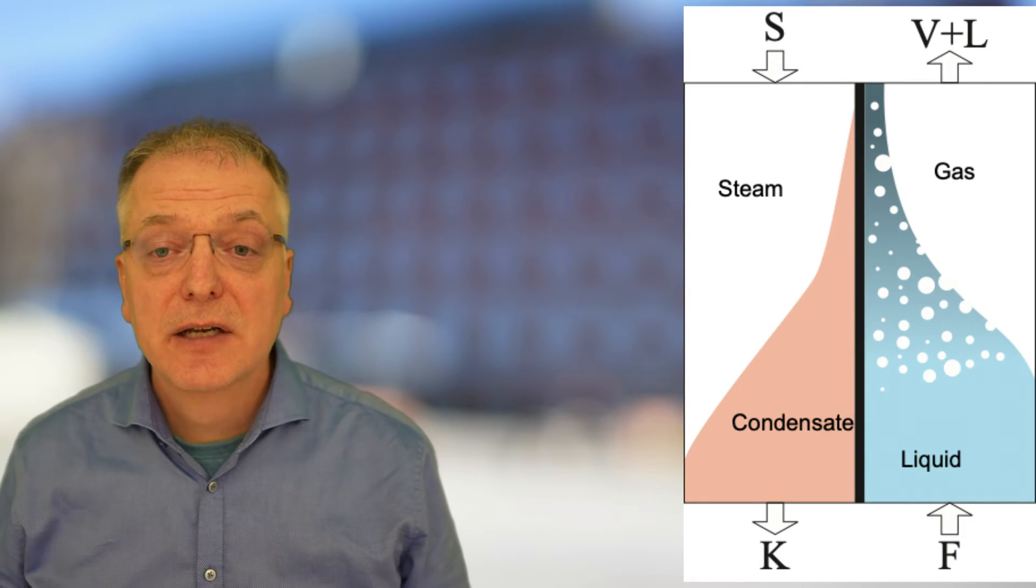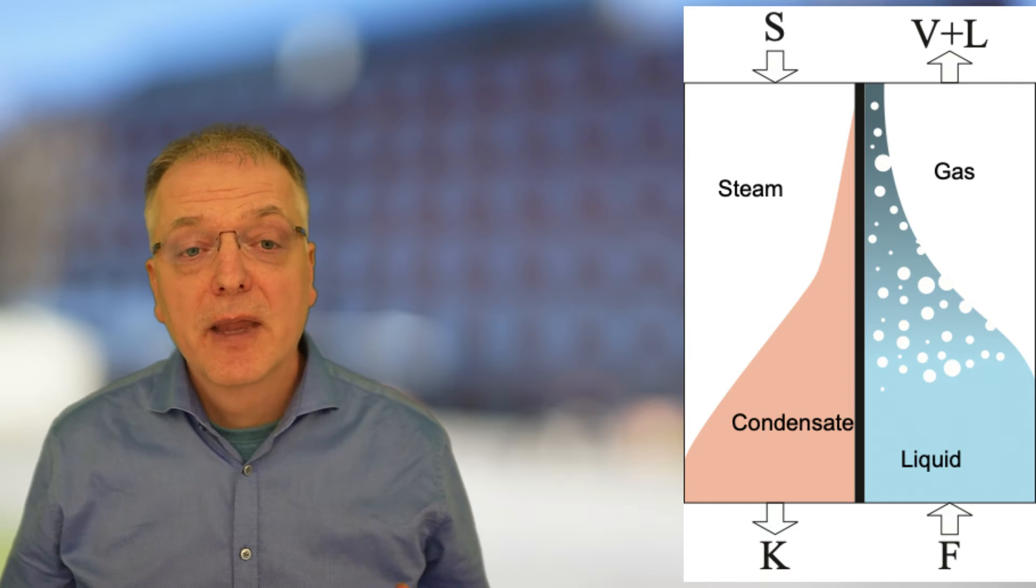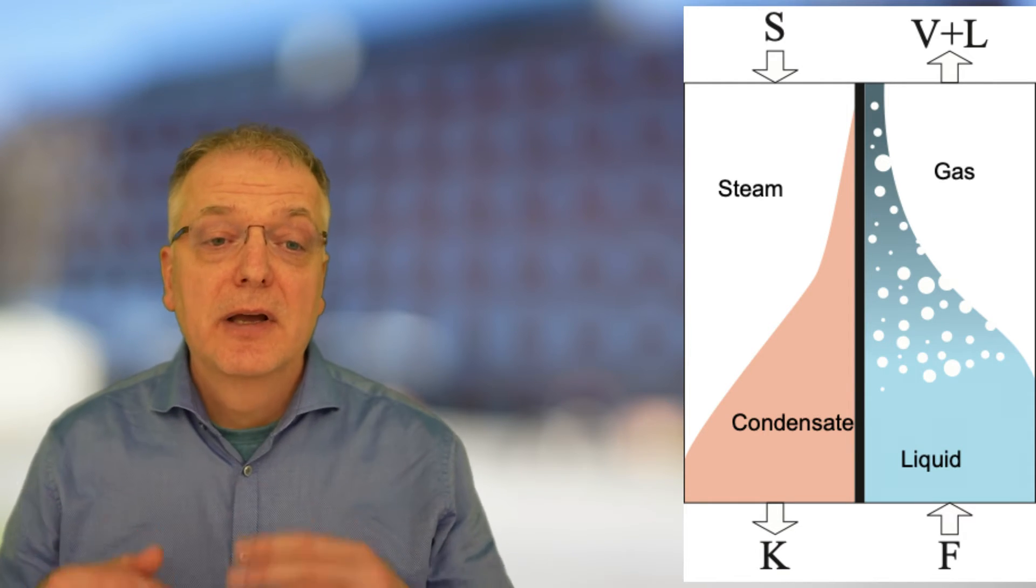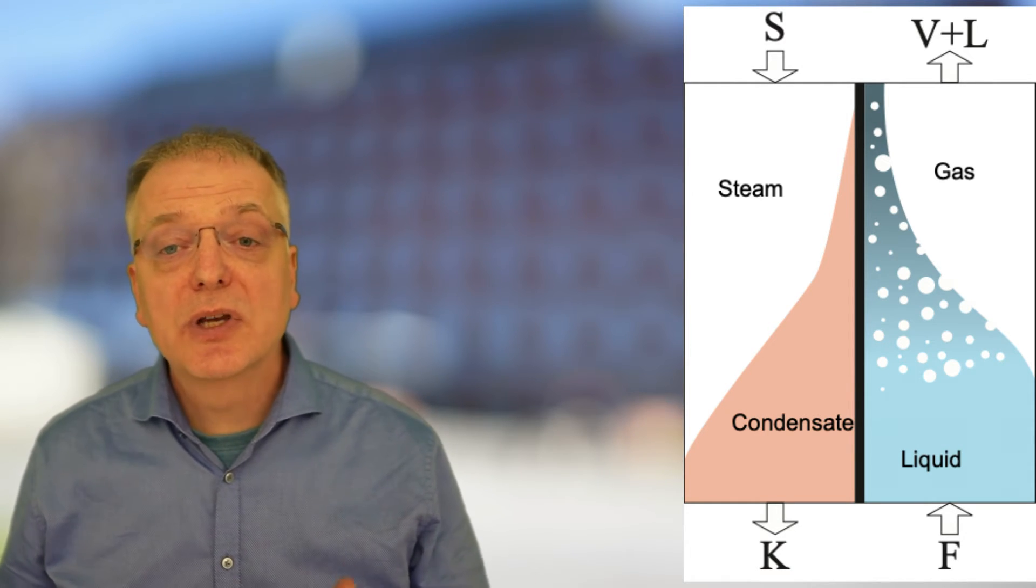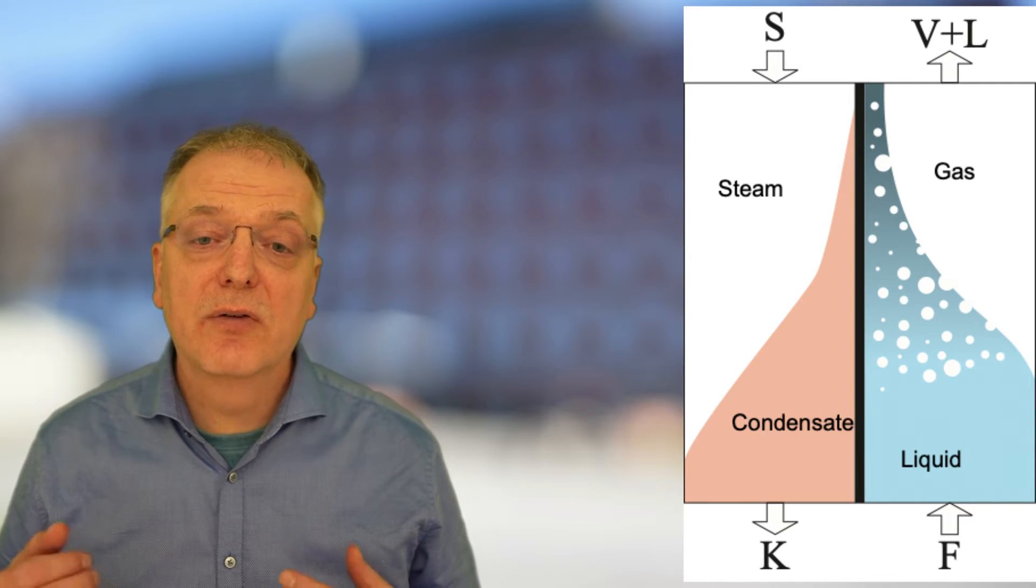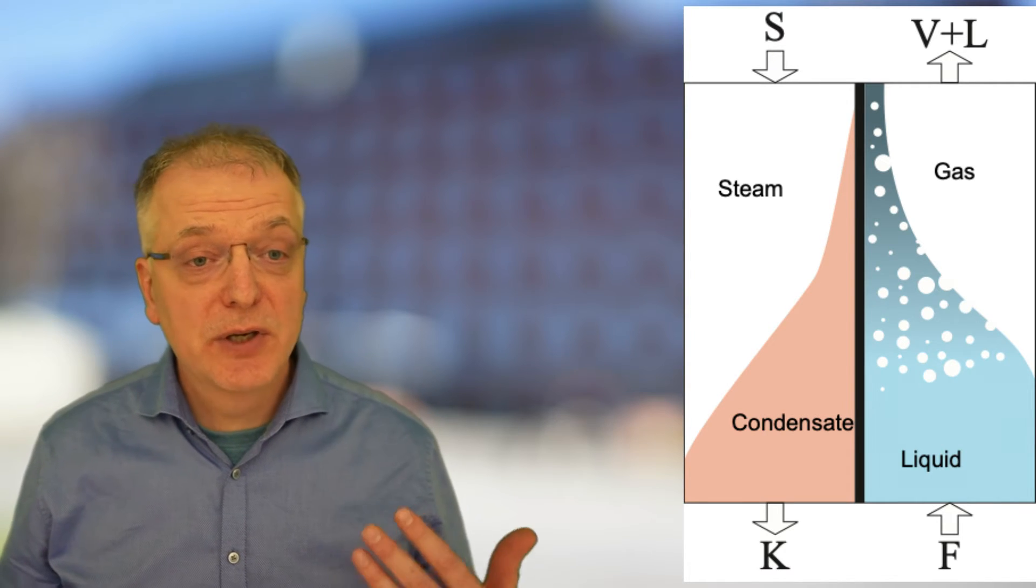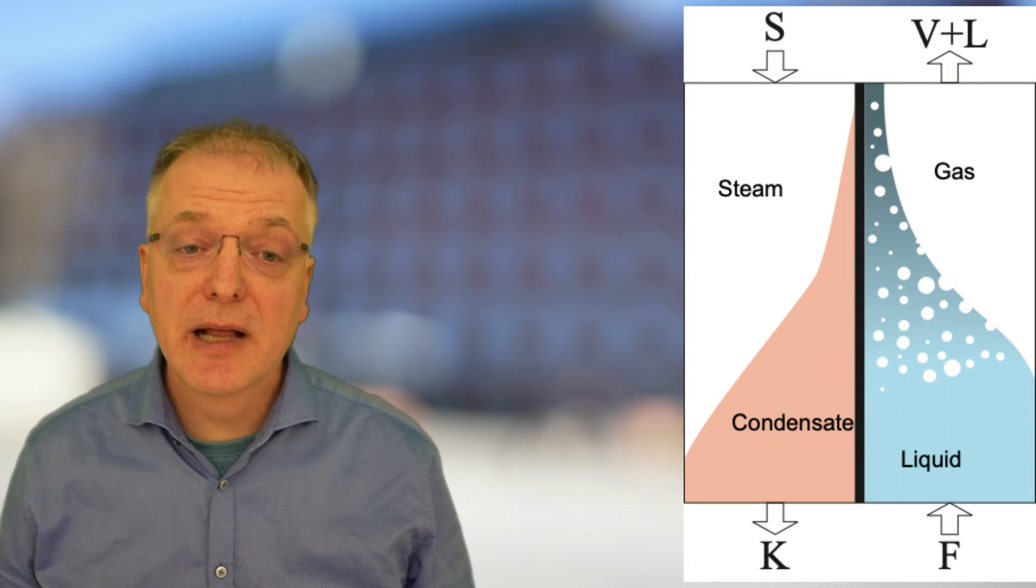On the cold side, the feed side, you have a liquid flow F that comes in, heats up, starts to boil, gradually producing larger and larger fraction of vapor. Out comes a vapor flow V and a concentrated liquid L.